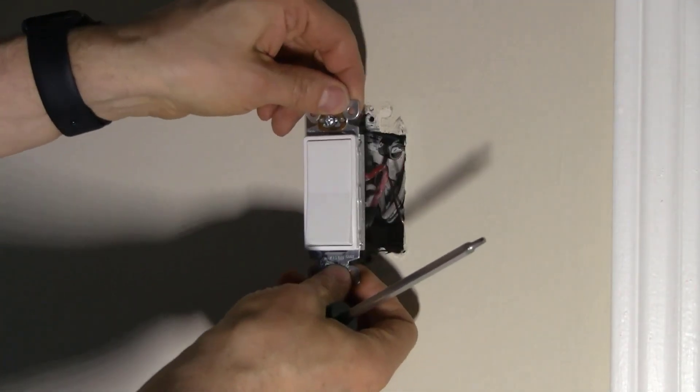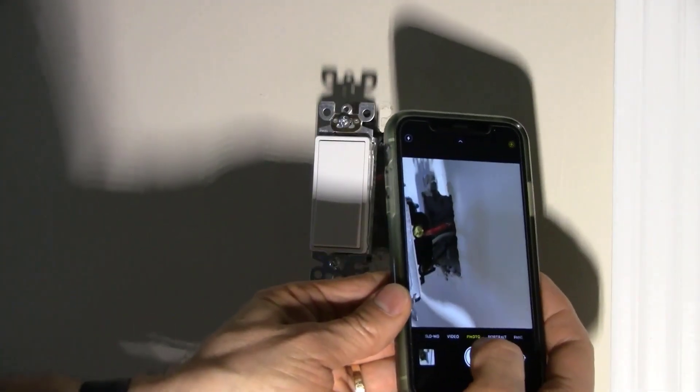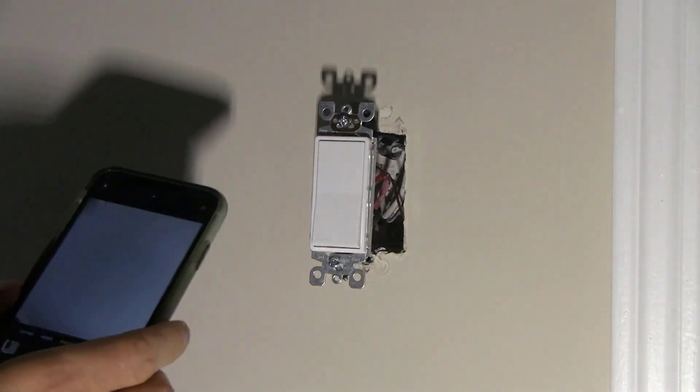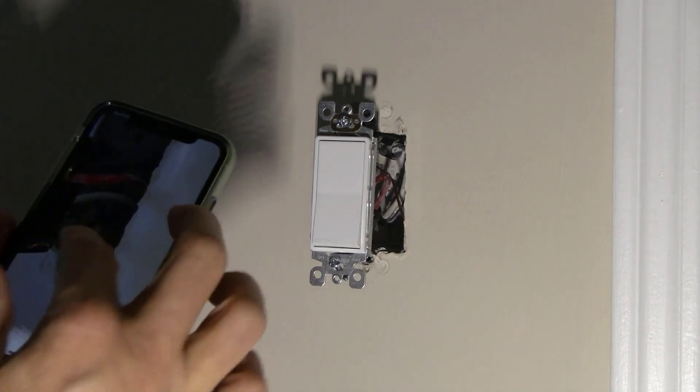The first mistake is not taking photos of the wires and the switch before you disconnect it. This is especially important with three-way and four-way switches. Take the cover plate off, unscrew the switch and pull it out of the box. Use your smartphone and take photos of all the wires and the screws. Make sure that you can see the colors of the wires and the screws because it becomes really difficult when you try to remember where that wire went. These photos will help you get the wires back on to the new switch in the correct spots.